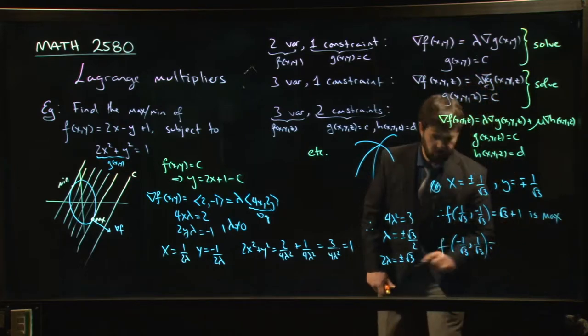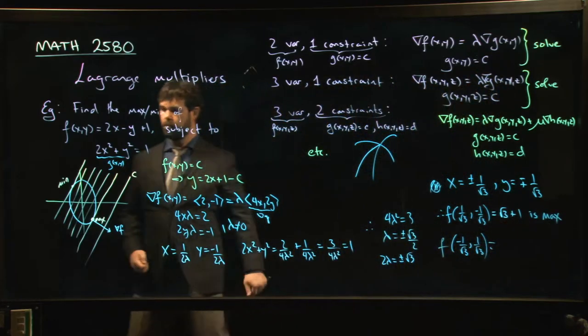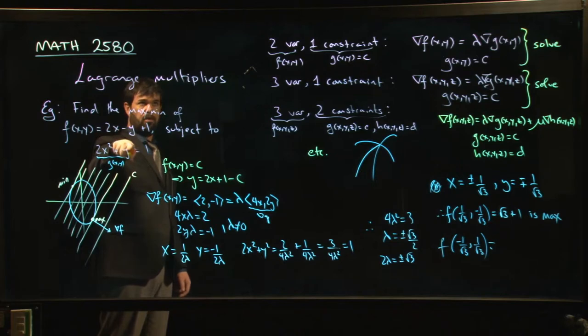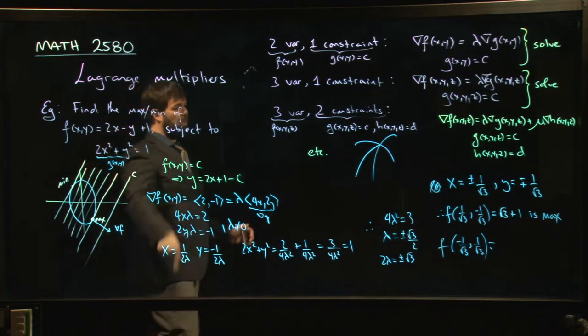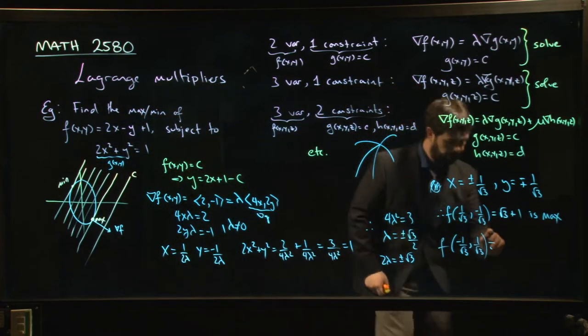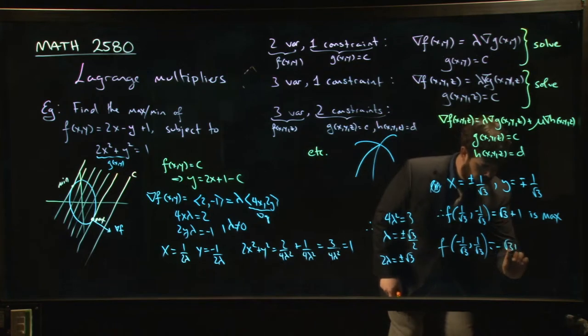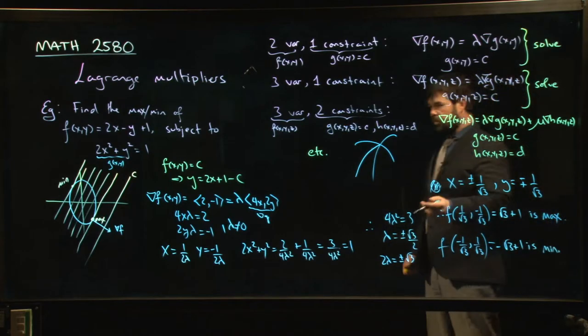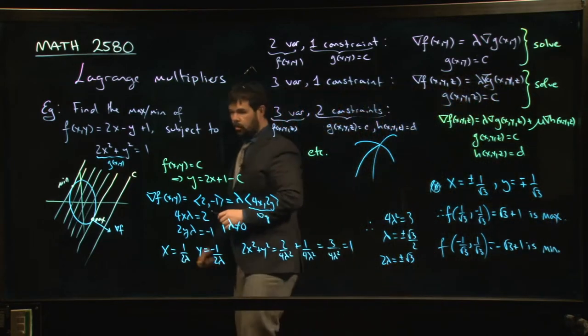And this one, now I have minus 2 over root 3 minus 1 more. So minus 3 over root 3, which is just minus root 3 plus 1. And that's the min.